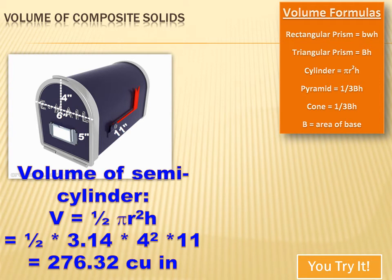Well, the volume of the semi-cylinder or half a cylinder would be one-half the volume of a cylinder. And the formula for the volume of a cylinder is pi r squared h. And I know what pi is, and I know what my radius is, and I know what my height is. So, when I multiply those out, I get 276.32 cubic inches.